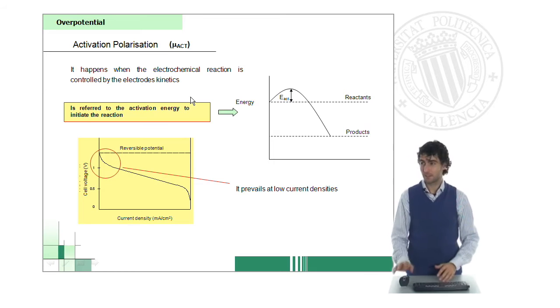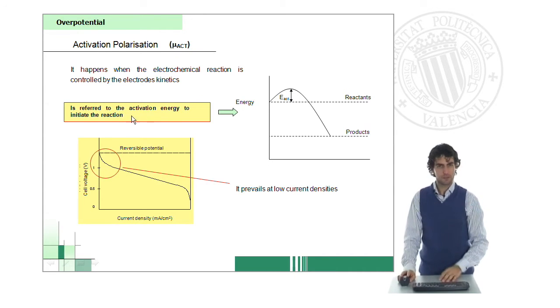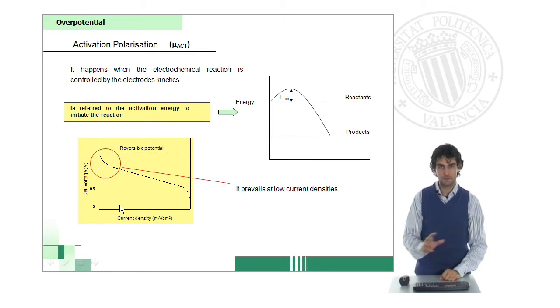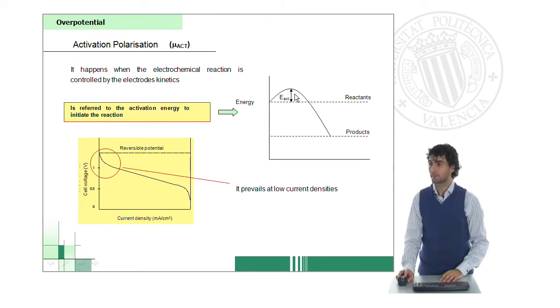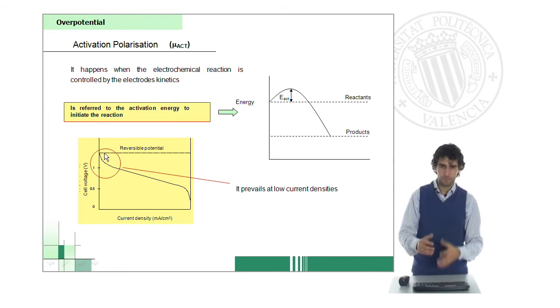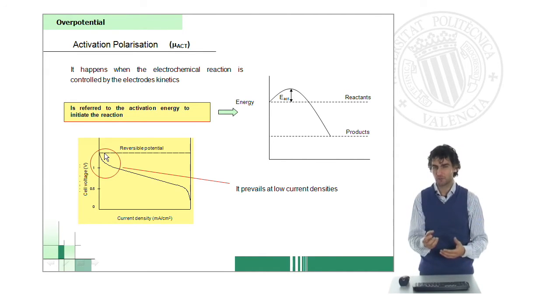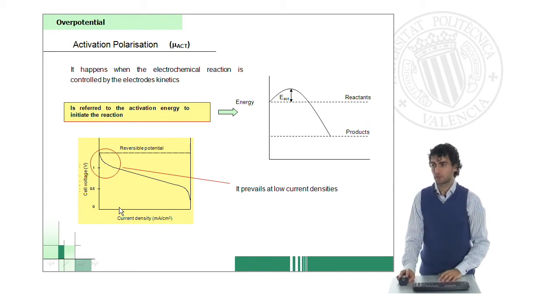Well, the first cause for overpotential is the so-called activation polarization. There are three. The first one, activation polarization. So activation polarization occurs especially when the current density is very low. When we don't have very high electricity flow, and then in this case what happens is that for the electrochemical reactions to start, we require some extra energy, which is called the activation energy. Then these electrochemical reactions, it's like they have problems starting and they take some extra energy from the voltage which is available, and then we see this drop of voltage in the cell. Again, this all happens especially when the current density is very low.